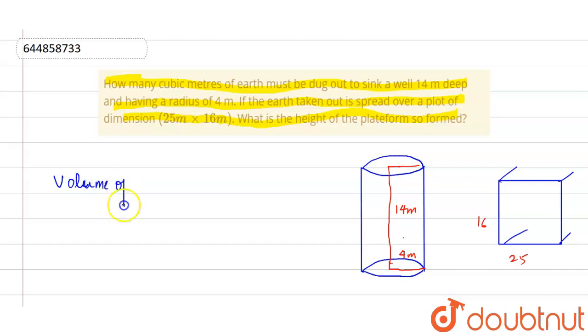Volume of cylinder equals pi r squared h. So volume of cylinder is equal to pi equals 22 by 7, multiply by r square.